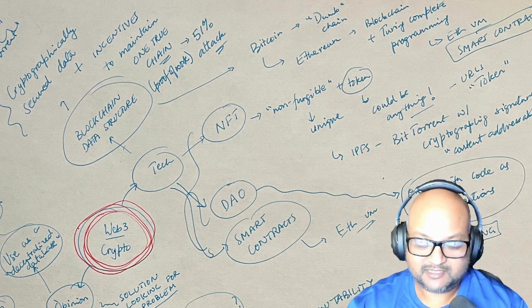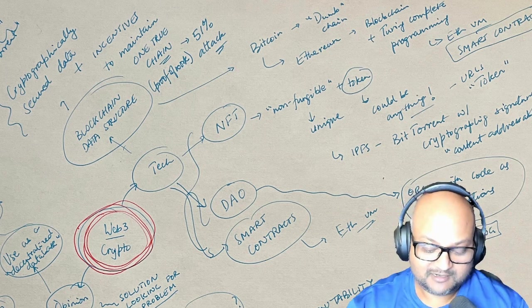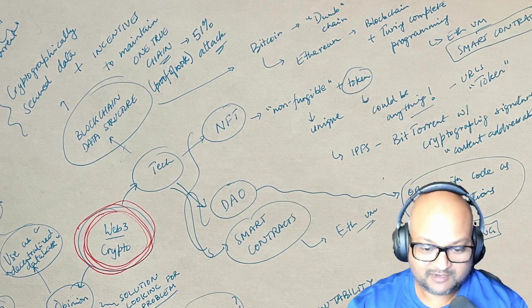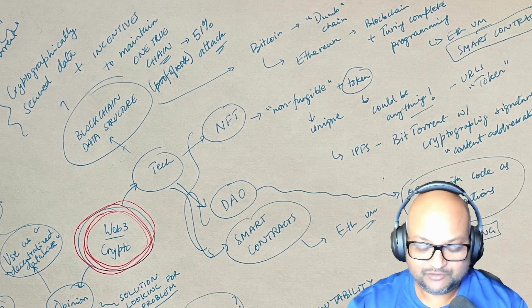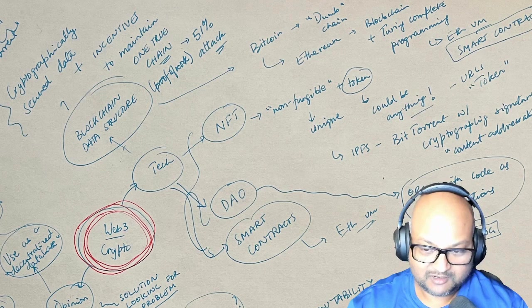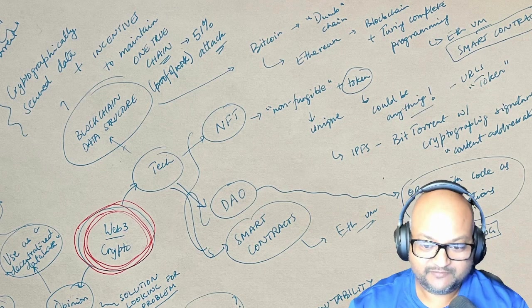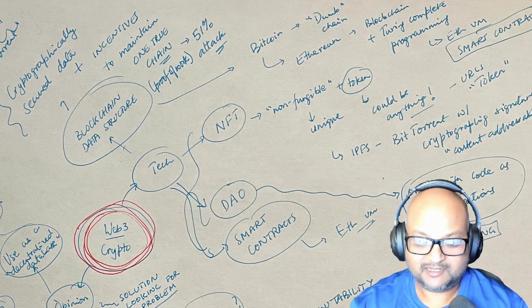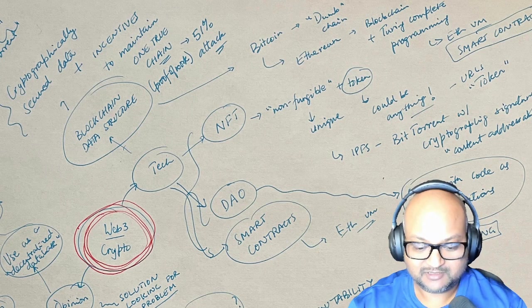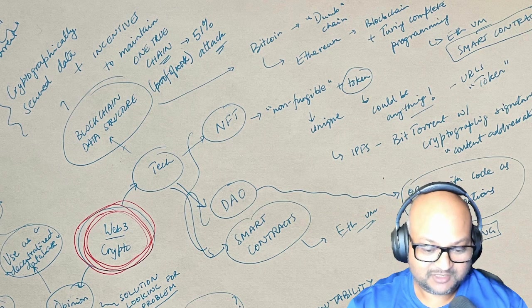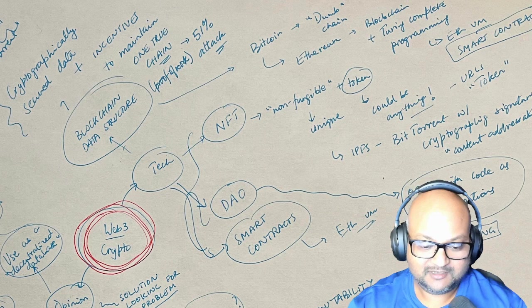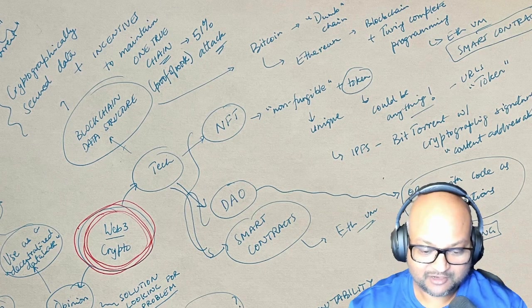This is what is known as proof of work and the situation that it leads to is that in order for someone to overtake the blockchain they would have to redo all the work in all the previous blocks on the chain. This is also sometimes known as a 51% attack because you would have to summon the majority of the computational power of the entire network in order to take over the blockchain.